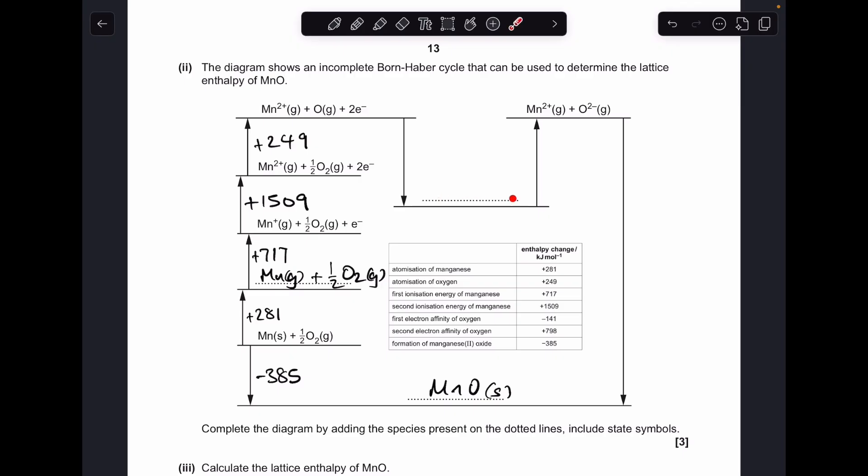OK, so this line here, what's happening? Well, the oxygen has ultimately gone from O gas plus two electrons to O²⁻ gas and no electrons. So basically, one of these electrons has gone on to form the O⁻ ion. So that means we need Mn²⁺ gas plus O⁻ gas plus an electron at that level. And that is the first electron affinity of oxygen, so that's -141.